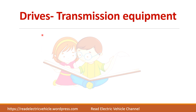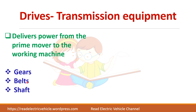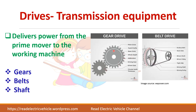Now let us see about transmission equipment. This helps to deliver the power from the prime mover to the working machine. Examples include gears, belts, and shafts — all of these are called transmission equipment.